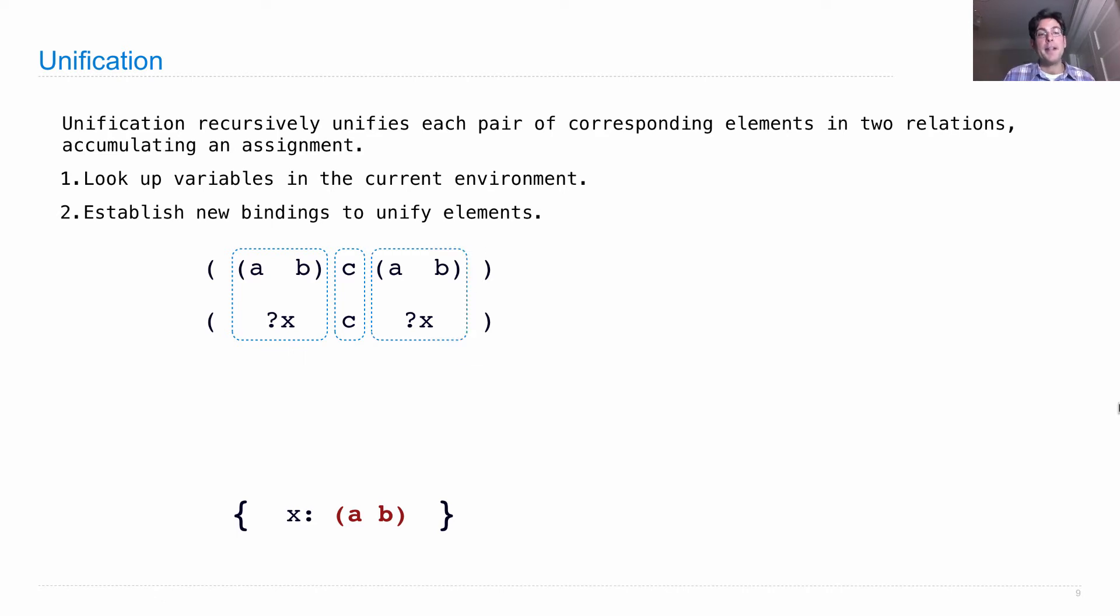And then in the third case, it's entirely different from the first one because we've already established a binding for x. So we look that up. We find that x is bound to a, b, and then we compare a, b to a, b, realize that those are the same. And so we've successfully unified. We would say success.